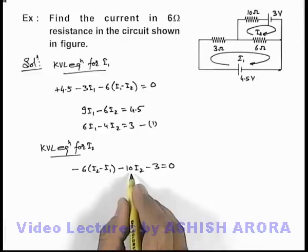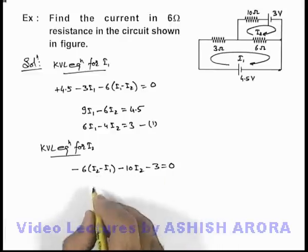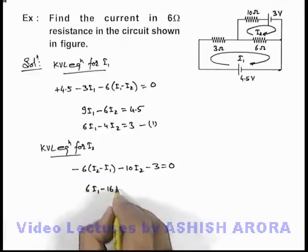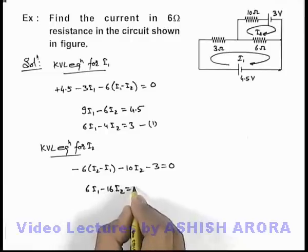On simplifying, finally we're getting it 6i1 minus 16i2 is equal to 3. This is our equation 2.